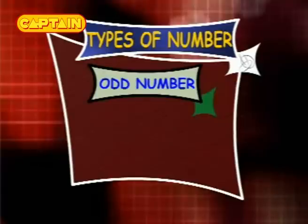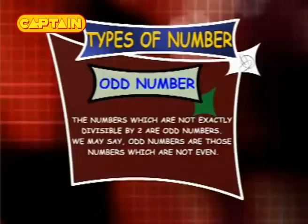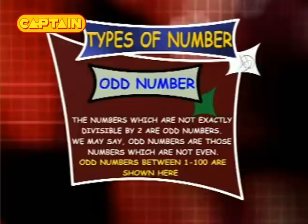Odd numbers: the numbers which are not exactly divisible by 2 are odd numbers. We may also say odd numbers are those numbers which are not even. Odd numbers between 1 and 100 are shown here.